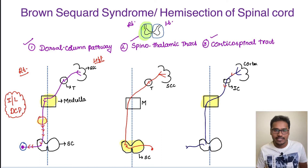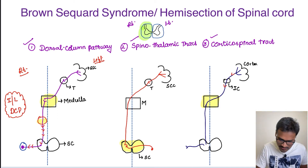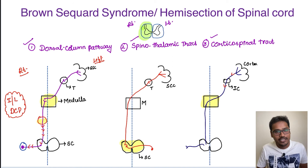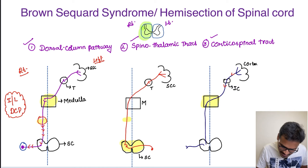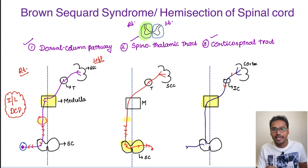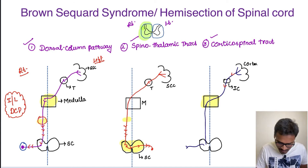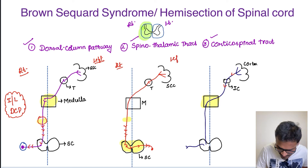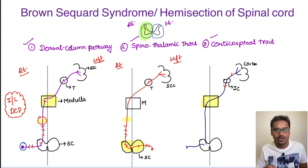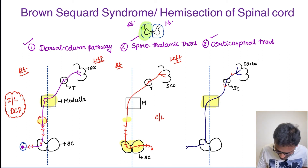Coming to the spinothalamic tract — the spinothalamic tract already crosses in the spinal cord itself. If there is a lesion on the right side, tracing the pathway back: which side will pain and temperature be affected? The pain on the left side will be affected, because the crossing over has already happened. Whenever there is hemisection of the spinal cord, the contralateral spinothalamic tract is affected.